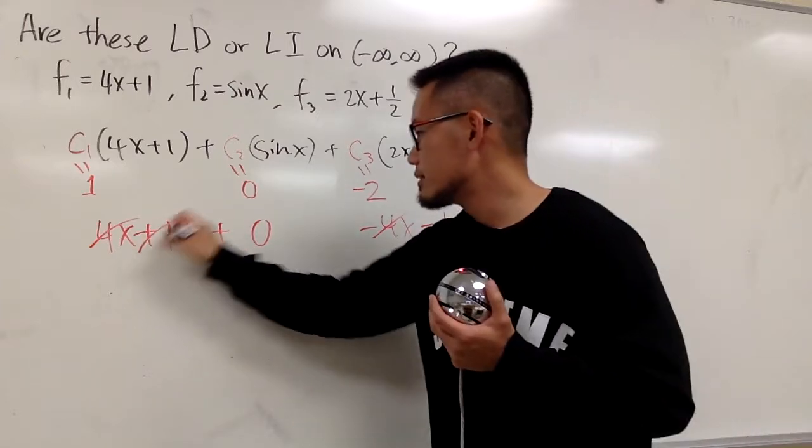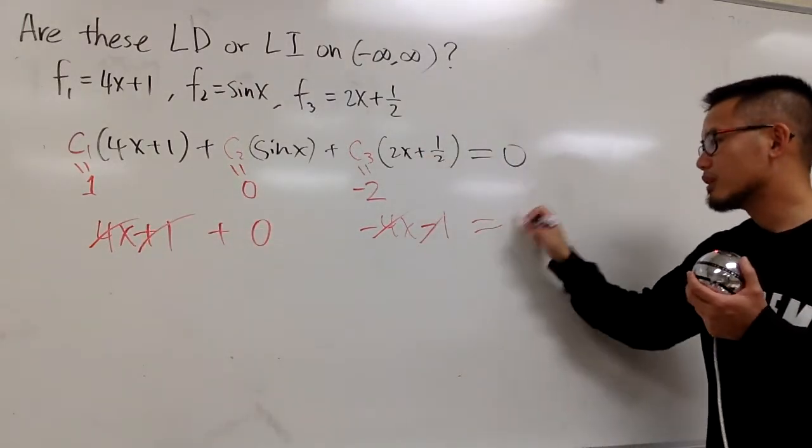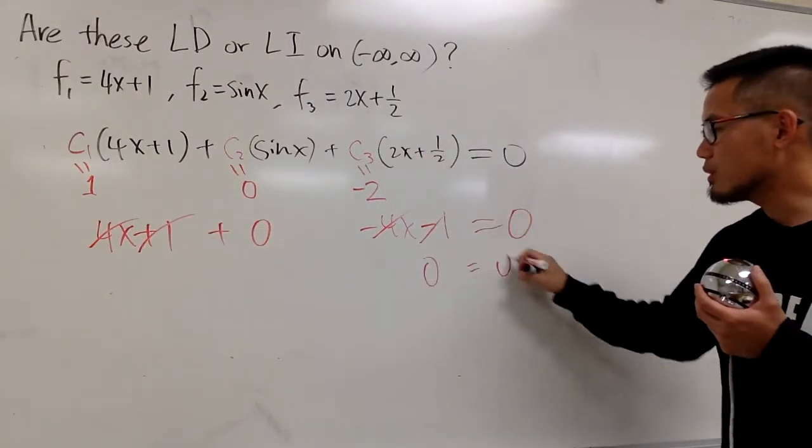This, that, cancel. This, cross out. Of course, you get 0 is equal to 0. Done.